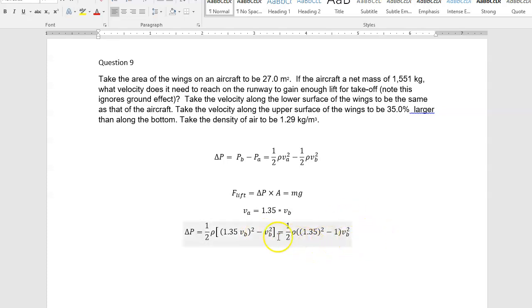And so you've got these terms, and that 1.35, remember that 35% comes from right there. So you've got delta P in terms of VB squared.